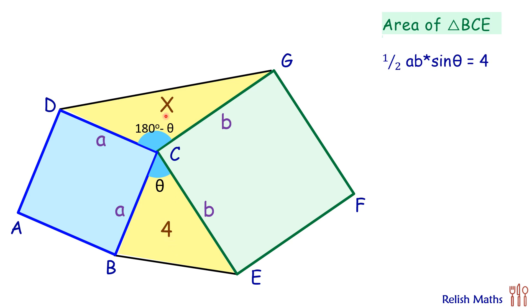Same way, area of triangle DCG will be half of the product of sides times sine of the angle between them, so half of ab sin(180° - θ). We know that sin(180° - θ) is nothing but sin θ, so it will be ½ab sin θ. But half